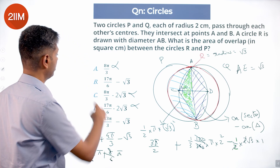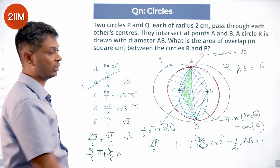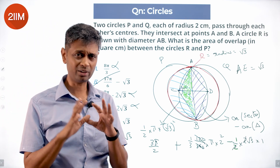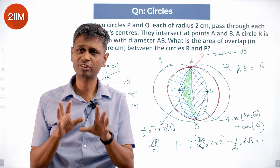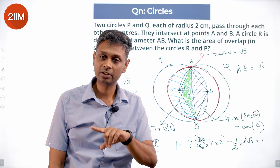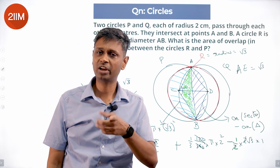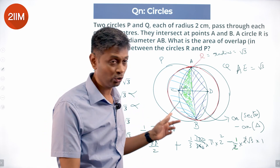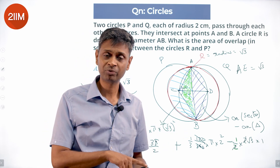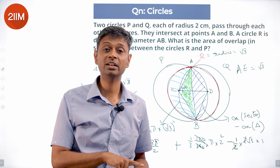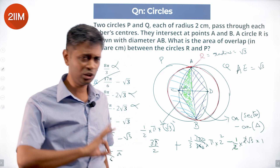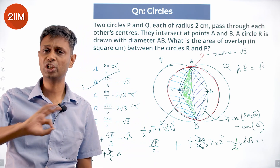That's the answer we're looking for. To summarize: draw the diagram carefully, recognize the overlap as a semicircle plus a segment. The semicircle uses radius √3, and the segment equals sector minus triangle for circle P. The answer is 17π/6 − √3. A beautiful and really challenging question!